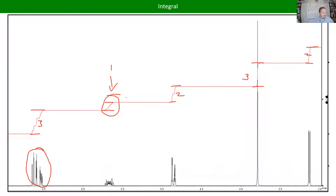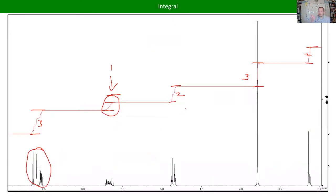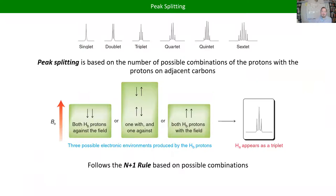So far we've covered: number of signals tells us a fair bit about the structure; where peaks show up tells us a fair bit, especially for finding aromatic rings; and the integral tells us the ratio of protons on each carbon. The last piece — peak splitting — is a little trickier to wrap your head around. Remember those three peaks I said we call one signal? It's because one proton is being split into closely spaced energy levels based on the number of hydrogens nearby.